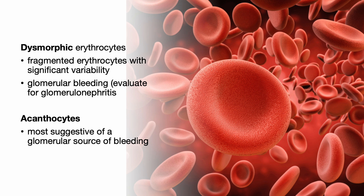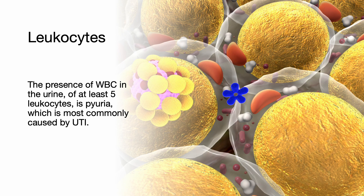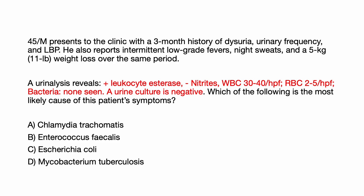Dysmorphic erythrocytes should result in a prompt evaluation for glomerulonephritis. The presence of WBC in the urine of at least five leukocytes is called pyuria, which is most commonly caused by UTI. Here's a 45-year-old male patient who presents to your clinic with a three-month history of dysuria, urinary frequency, and low back pain. He also reports intermittent low-grade fevers, night sweats, and a five-kilogram weight loss over the same period. Urinalysis reveals positive leukocyte esterase, negative nitrites, WBC elevated at 30-40 per high power field, RBC 2-5, bacteria not seen, and the urine culture is negative.